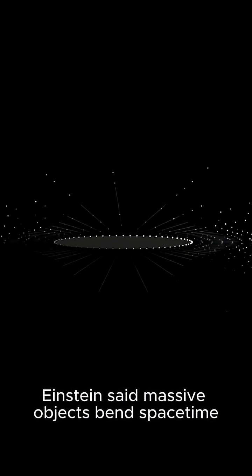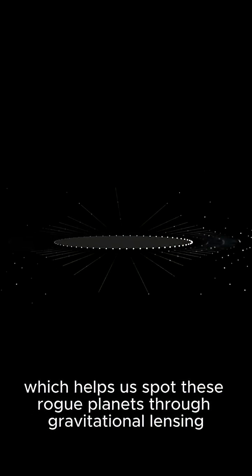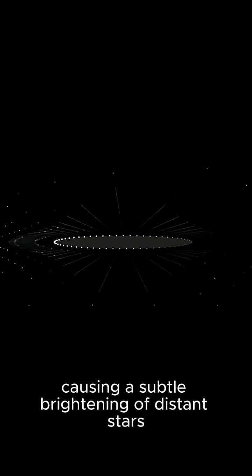Einstein said massive objects bend spacetime, which helps us spot these rogue planets through gravitational lensing, causing a subtle brightening of distant stars.